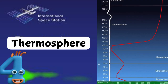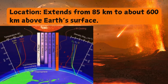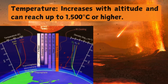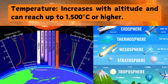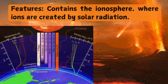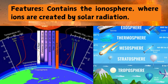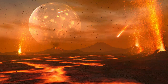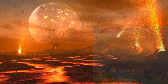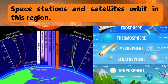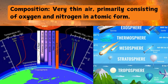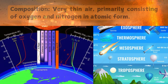Number four: Thermosphere. Location: extends from 85 kilometers to about 600 kilometers above Earth's surface. Temperature increases with altitude and can reach up to 1500 degrees Celsius or higher. Features: contains the ionosphere, where ions are created by solar radiation — this is important for radio communication as it reflects radio waves back to Earth. Space stations and satellites orbit in this region. Composition: very thin air, primarily consisting of oxygen and nitrogen in atomic form.